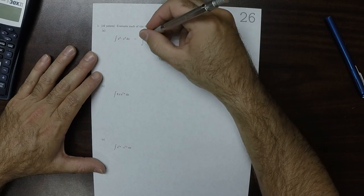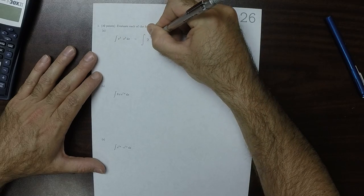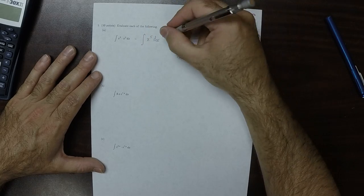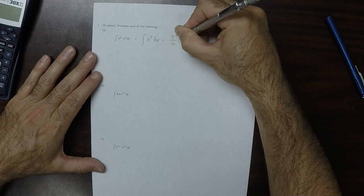Okay, so that would be simplified to x to the 5 dx, and then that's x to the 6 over 6 plus a constant.